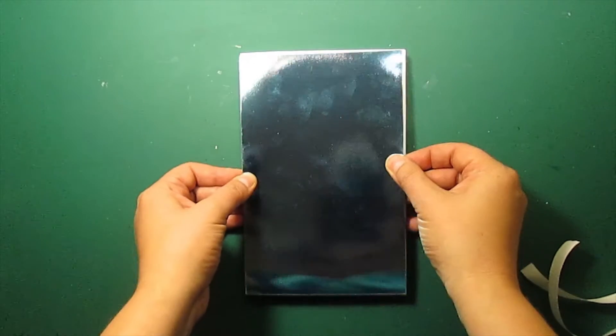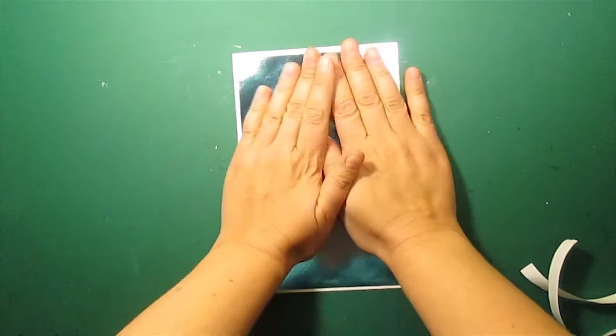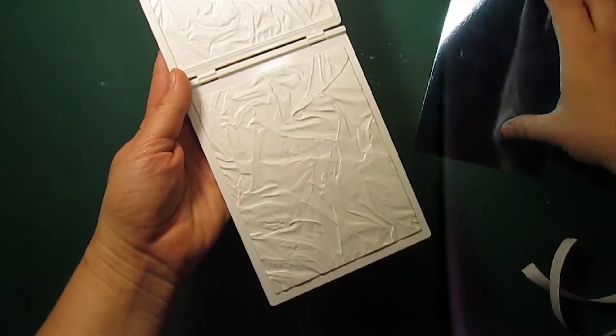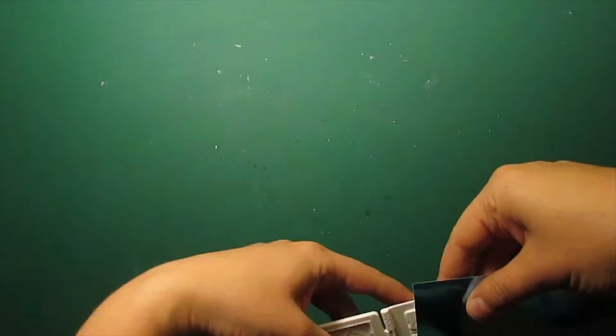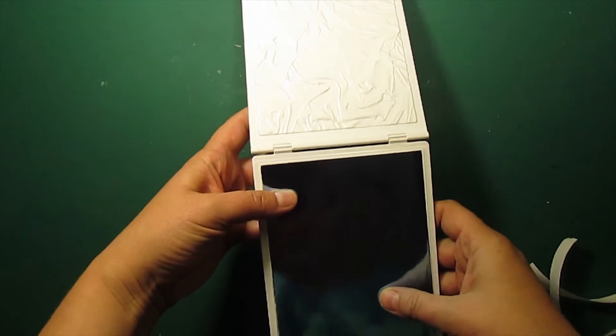Now I'm sticking down the blue mirror cardstock mat to the card base. I'm going to emboss another piece of this blue cardstock using the fabric weave embossing folder by Spellbinders.